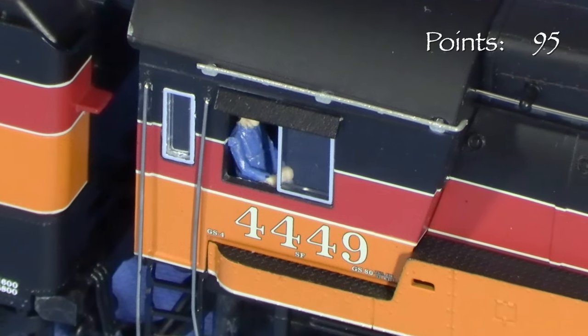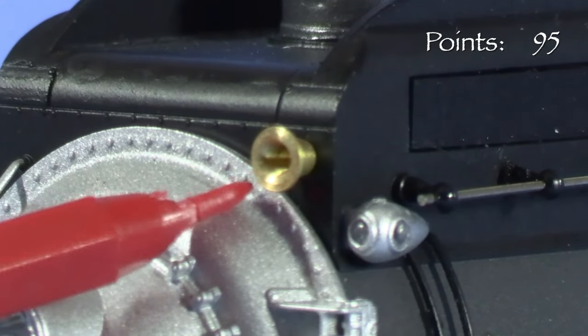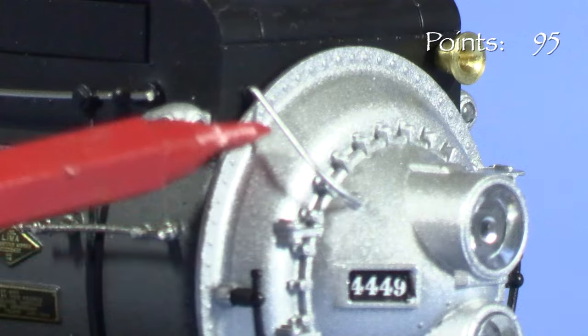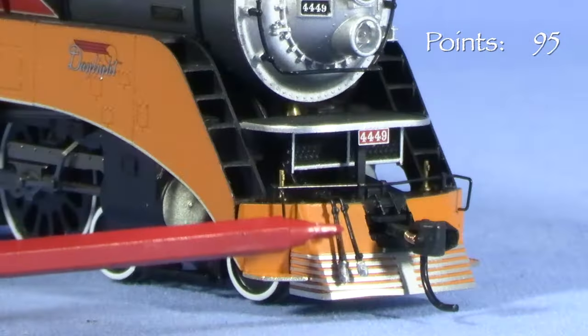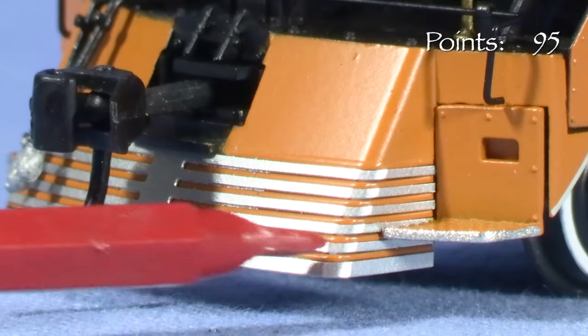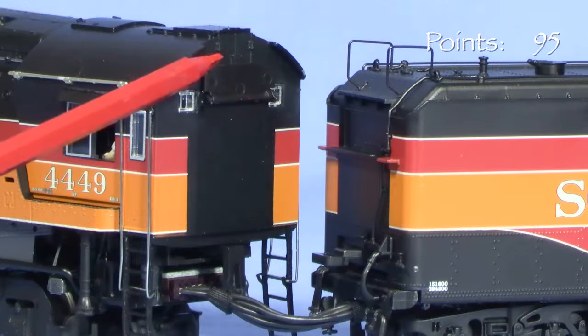Details in the front include the characteristic SP air horn, freestanding headlight conduit, number boards on the boiler face, front number plate, uncoupling lever, hoses, and photo-etched pilot trim. This is actually a separate part, not just painted on. Like the prototype, the rear of the enclosed cab is fairly plain, but it does have a drop-down deck plate.